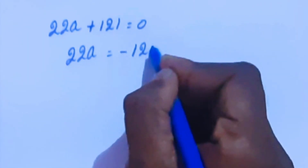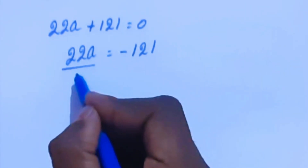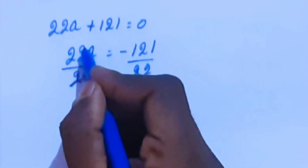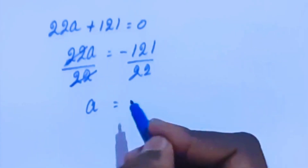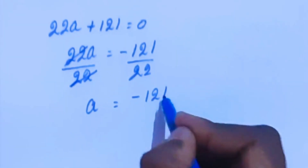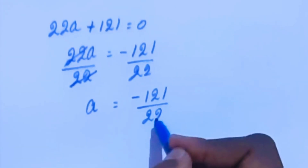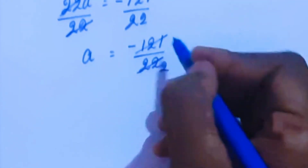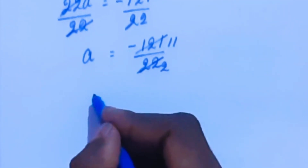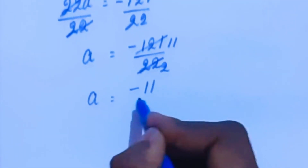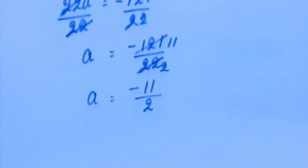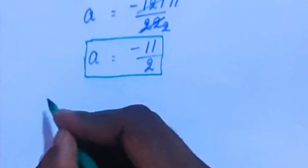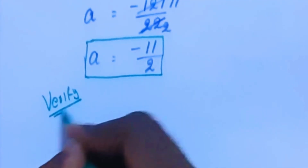Now moving 121 to the right-hand side gives 22a = -121. Dividing both sides by 22, the 22 cancels, so a = -121/22. Simplifying using the 11 table, a = -11/2. This is the value of a.